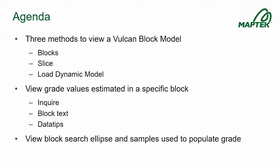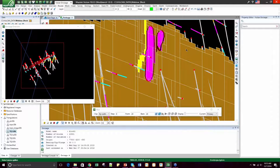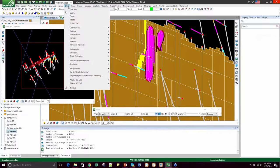Viewing the model dynamically is helpful because you can move through the block plane quickly throughout the entire modeling area. You can also easily modify the slice by variable, color scheme, and apply certain restrictions. The downside is that if you have a very large model, it might take a while to load. Those are the three different viewing tools we discussed today. The next thing we're going to talk about is how to view grade values estimated in a specific block using the Inquire tool, block text, and data tips.